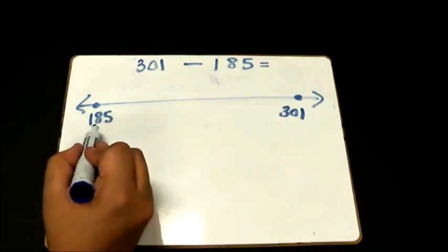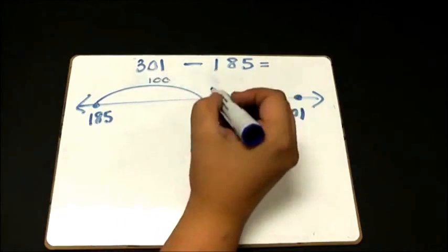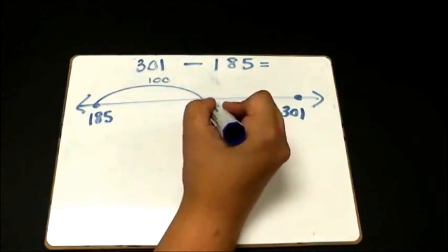When I look at this number line, one jump that I can see is the jump of 100 because that will get me to 285.